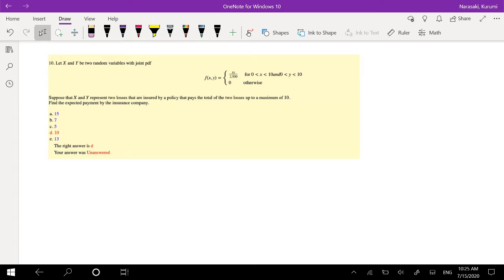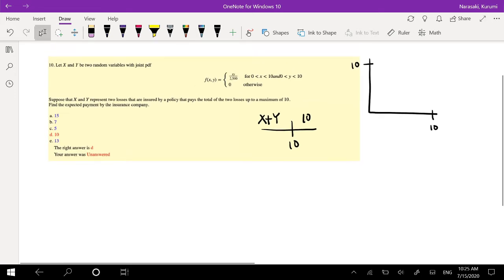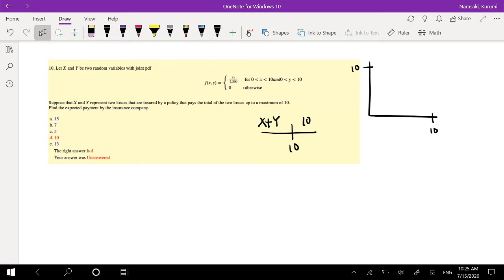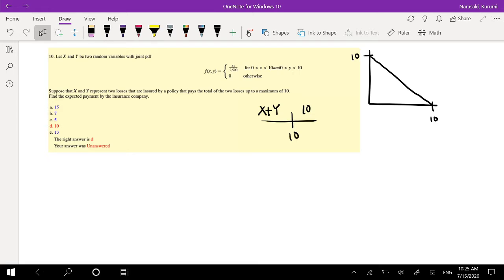Okay, so suppose that X and Y represent two losses that are insured by a policy that pays the total of the two losses up to a maximum of 10. So, I'm going to draw this out real quick. X and Y are both bounded by 10, right? And the insurance company before 10 pays the total sum, pays the total amount of the two losses. But after 10, it only pays just 10. It's not going to pay more than 10, because it's the maximum.